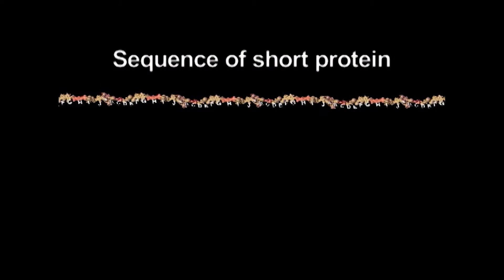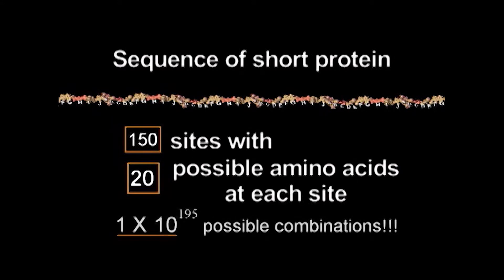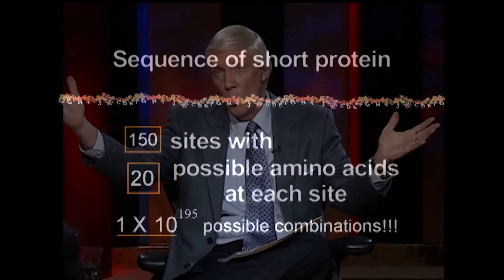Where did this information come from? How did it get there in the first place? Because the information, as we're going to see, is absolutely enormous and complex. You could have 150 of those amino acids in just a regular protein — that's just a short protein. You could have 1,000 or more in the bigger proteins, and they've all got to be arranged in the right order.